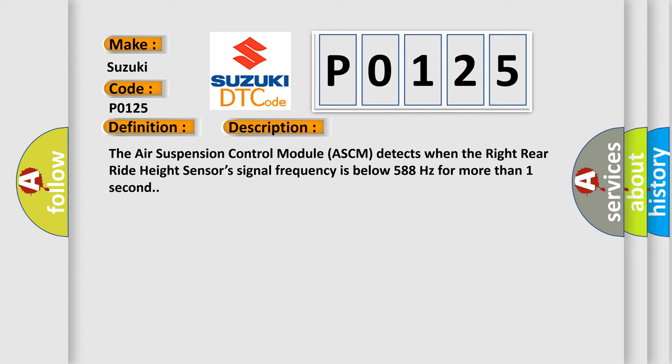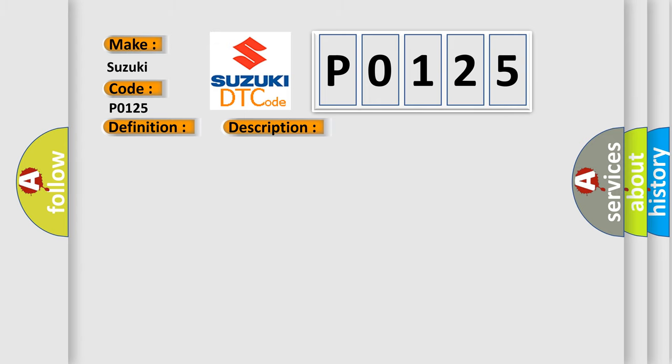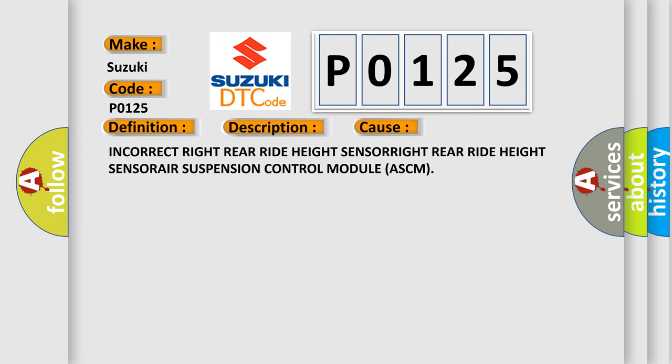This diagnostic error occurs most often in these cases: Incorrect right rear right height sensor, right rear right height sensor, air suspension control module ASCM. The airbag reset website aims to provide information in 52 languages.